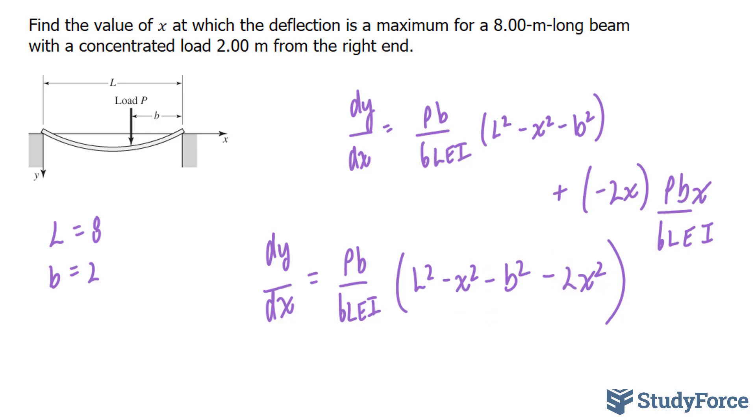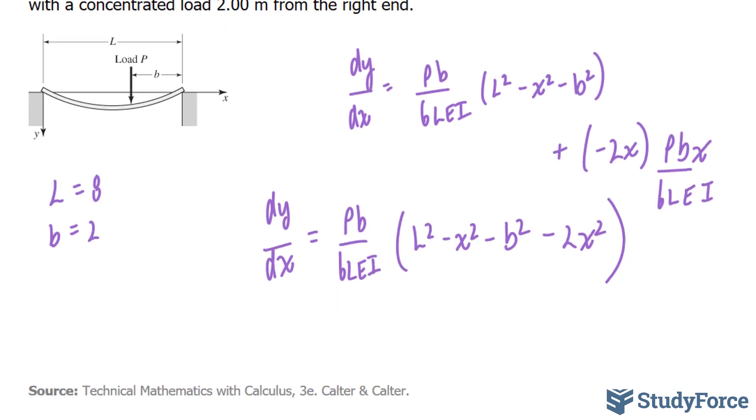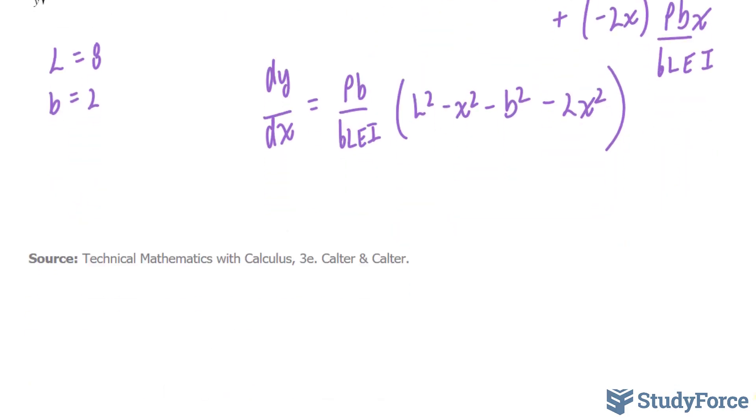Now I can collect like terms. Take a look. This term and this term are alike. I can subtract them. If I subtract them I end up with negative 3x squared. Pb over 6LEI times L squared minus 3x squared minus b squared.